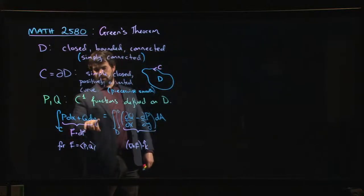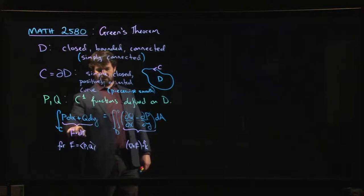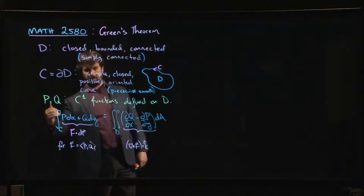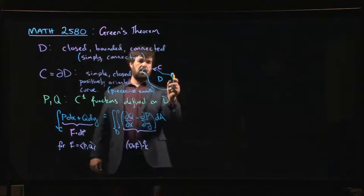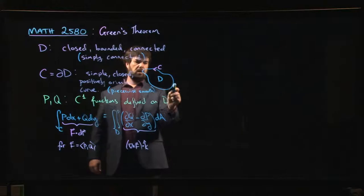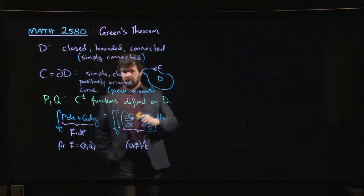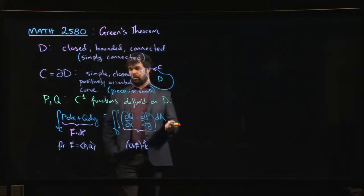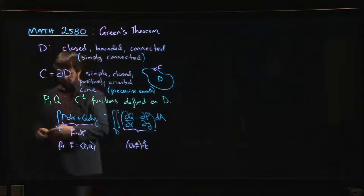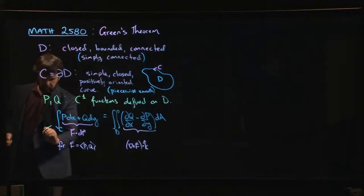Rather than computing this flow integral, we're calculating the component of the vector field in the direction of the curve. We're working out how much of the vector field is flowing along the curve. Because it's a closed curve, one other thing to note is that what you're computing here is really a circulation.